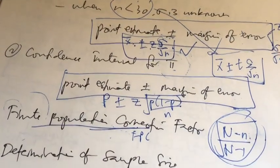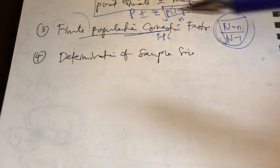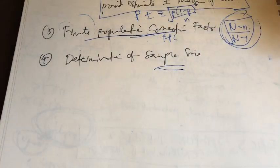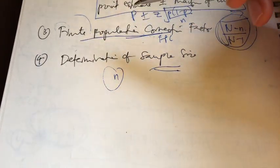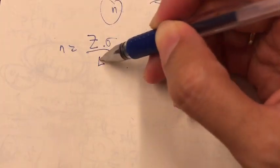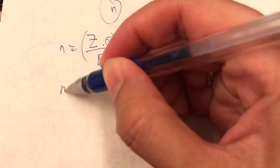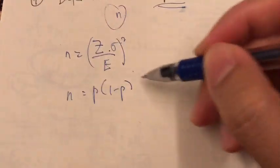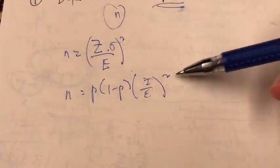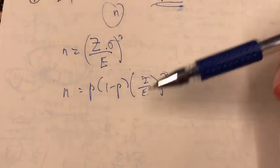Finally in topic 6, we learned how to calculate the appropriate sample size. Previously n was given to us; now we need to find n. There are two formulas depending on the question. To find the appropriate sample size for estimating the population mean, we use: n equals (z times sigma over E) squared. To find n for estimating the population proportion, we use: n equals p times (1 minus p) times (z over E) squared.